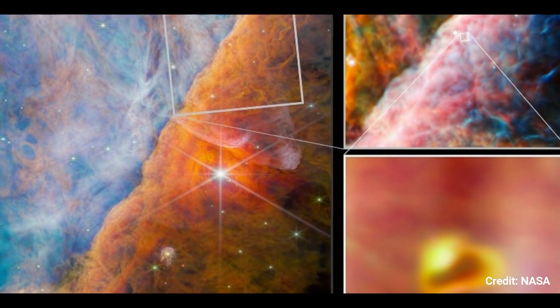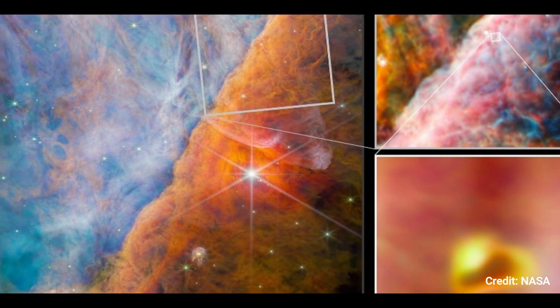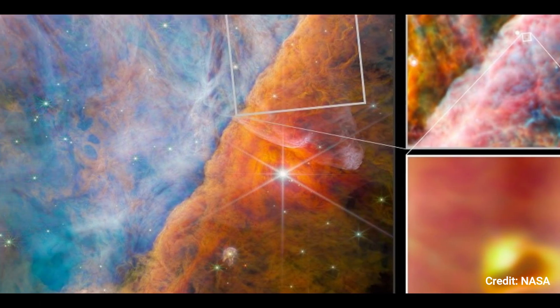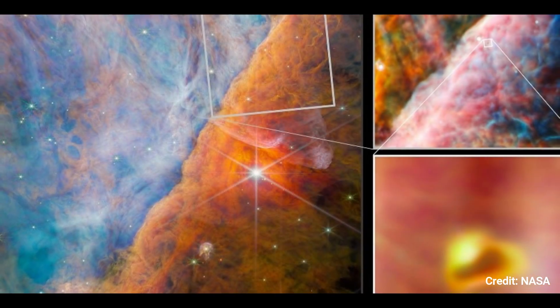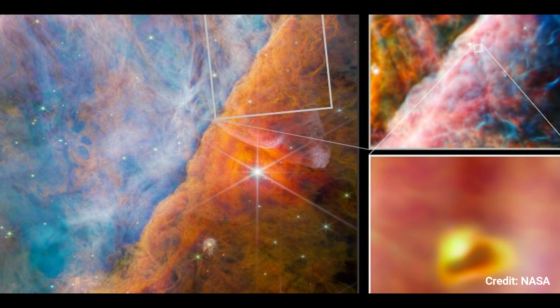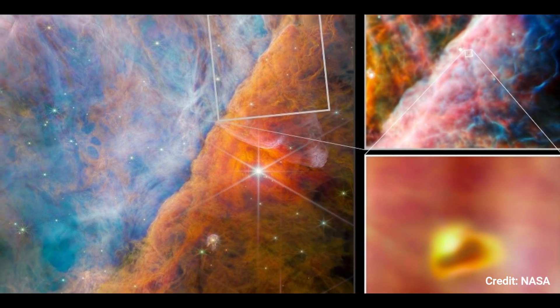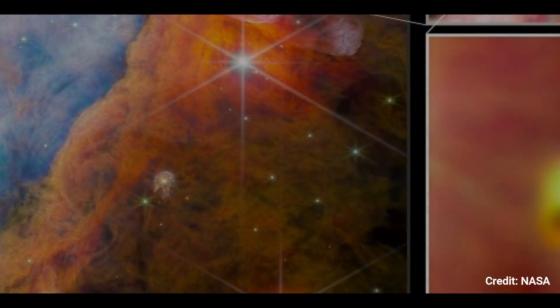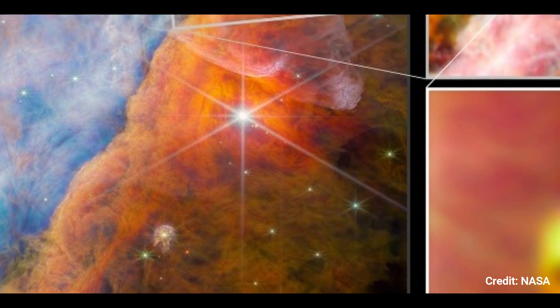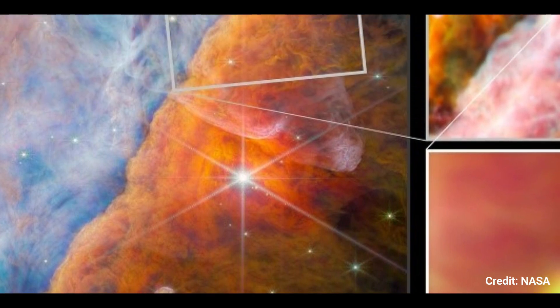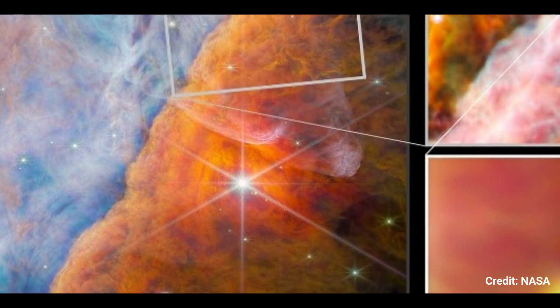Webb's NIRCAM instrument produced the largest image on the left. The telescope is focused on a smaller area in the top right, using Webb's MIRI. In these photos, 18 filters from the MIRI and NIRCAM instruments were used, encompassing a wavelength range of 1.4 microns in the near-infrared to 25.5 microns in the mid-infrared.